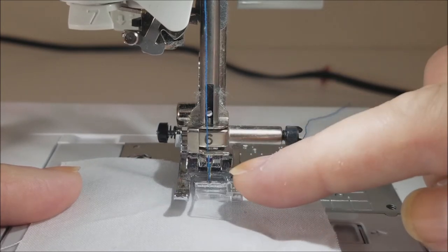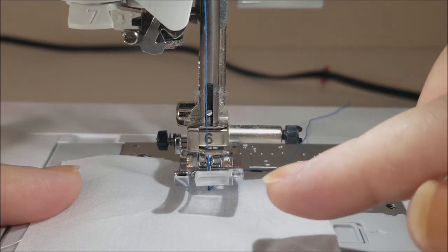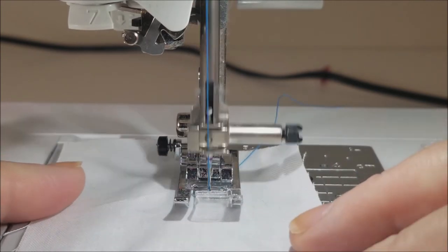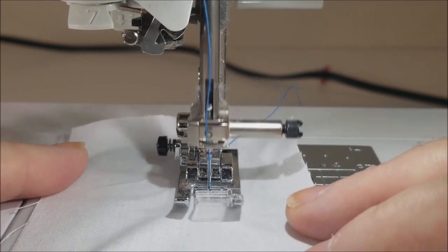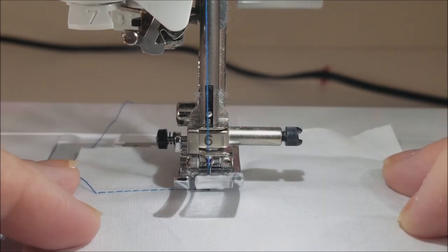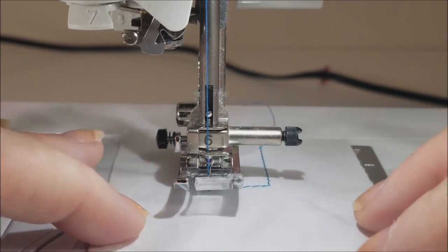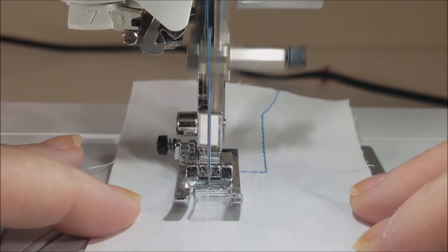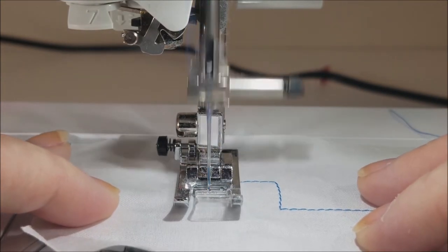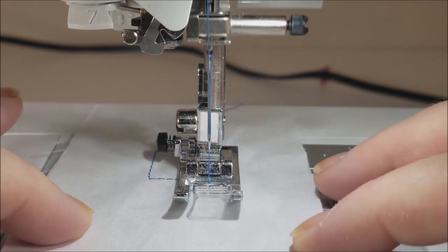You don't have to lift anything at the back, it's literally going to automatically raise. So I'm going to press the presser foot down, do a few stitches and now I'm going to release it. I'm not going to use my hands and it's going to raise. So now you'll be able to pivot, continue, stop, it's going to raise again. You're going to be able to pivot, then continue and stop. It's going to raise automatically, you can pivot and go again. This is going to save you some time guys, I love this feature.